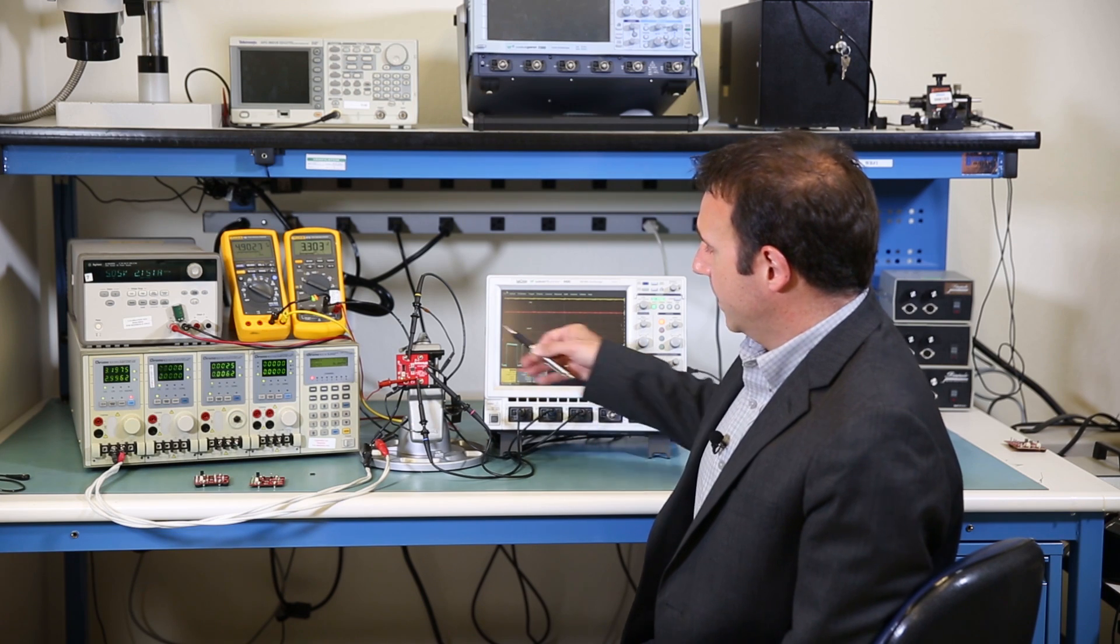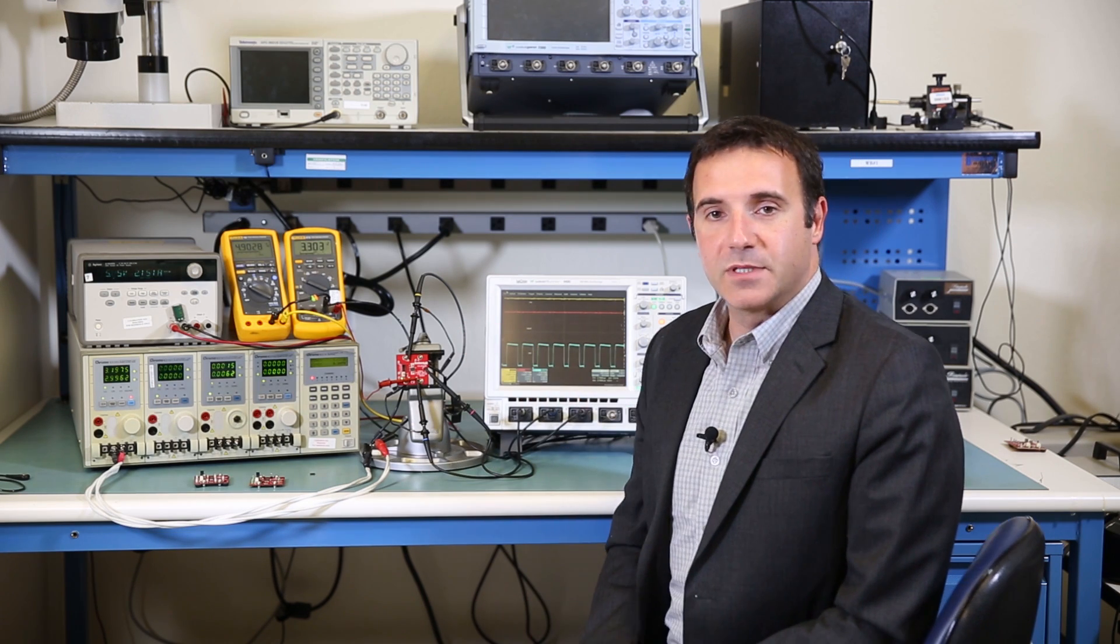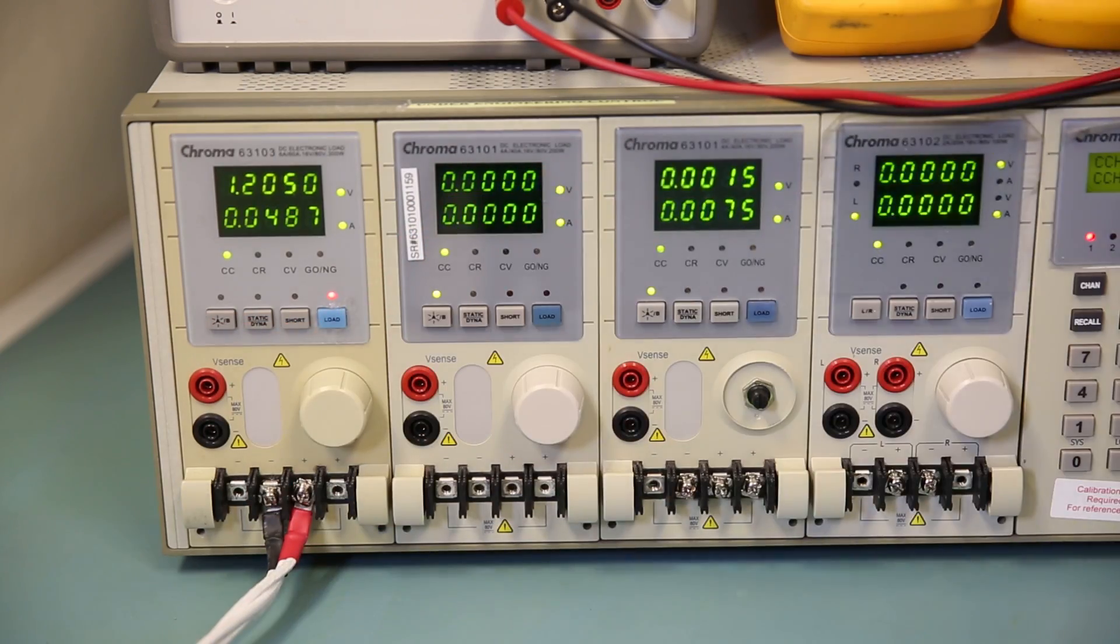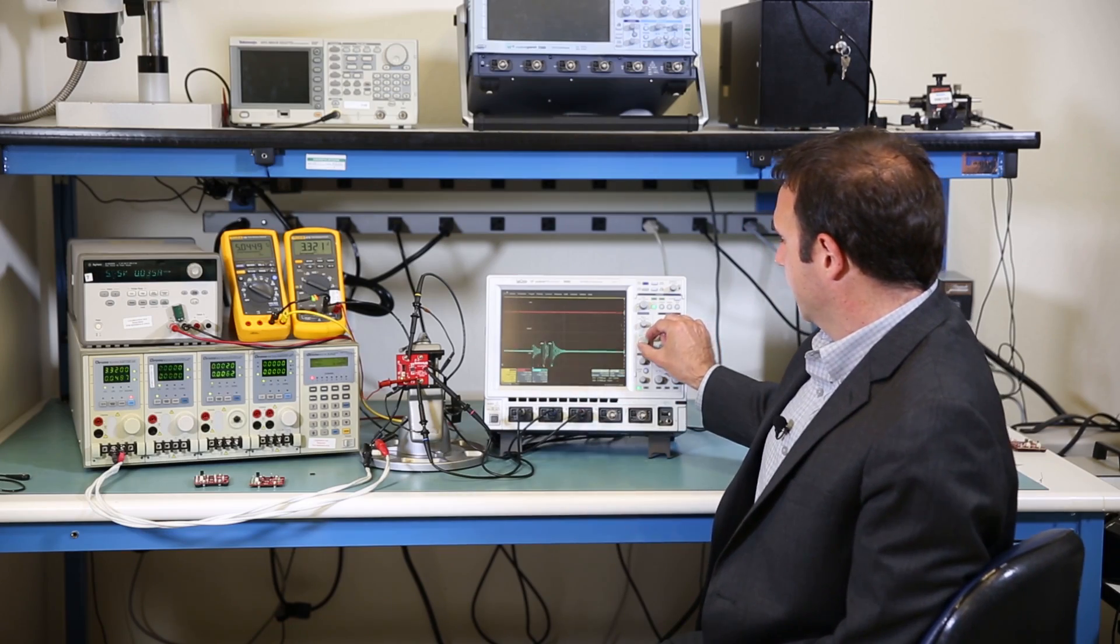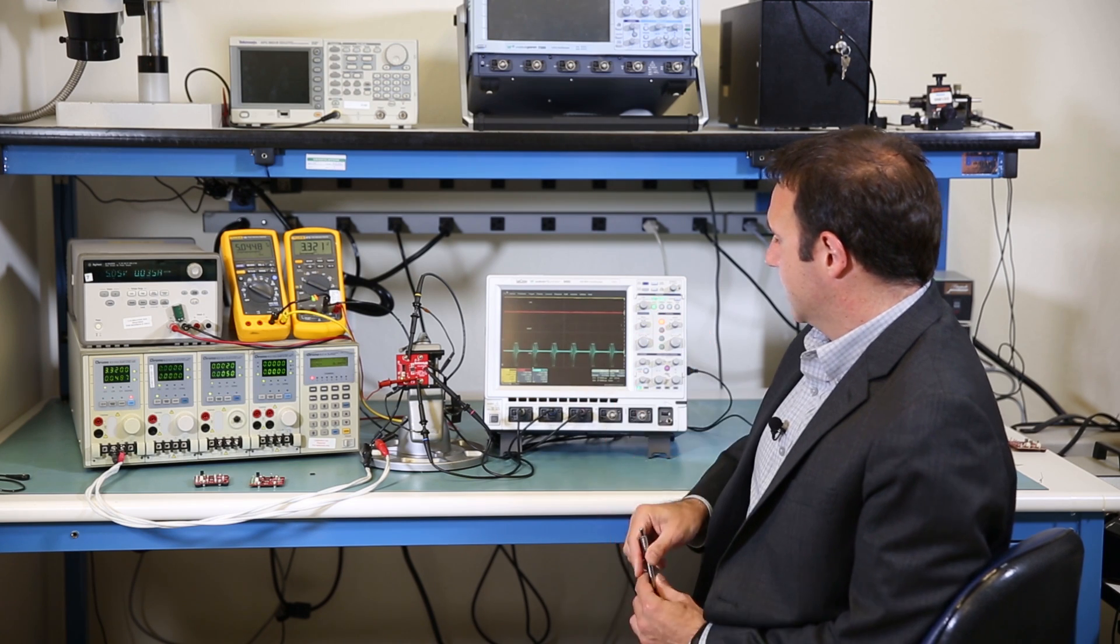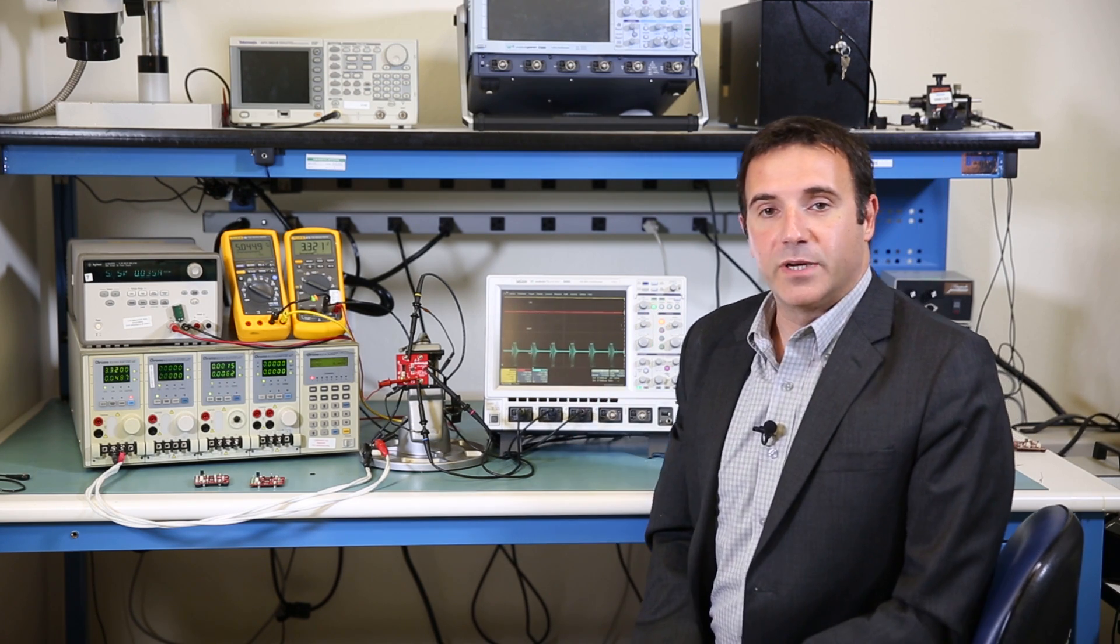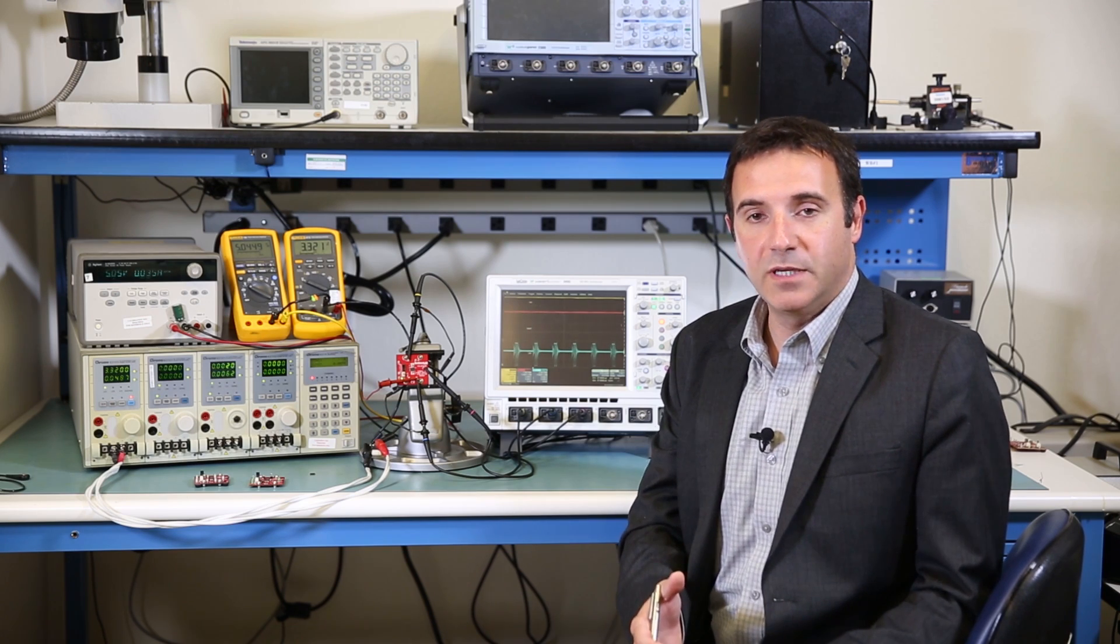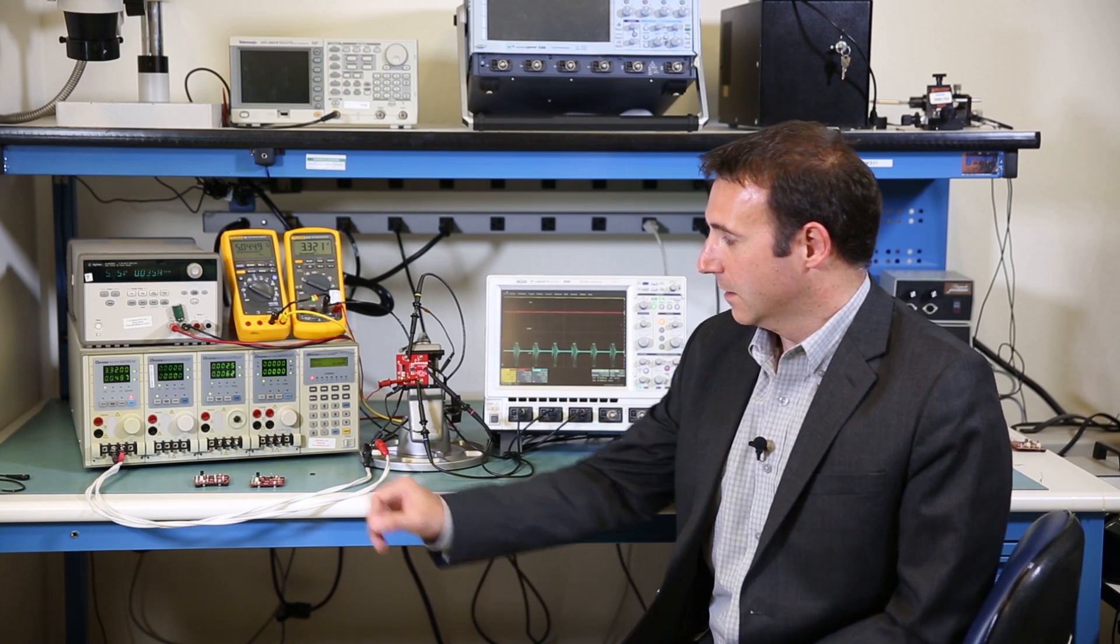We see here that we are currently running at 3 amps of output current. I'm going to switch down to 50 milliamps. And one thing that we are observing immediately is that our switching node operates by burst pulses. This is also known as pulse keeping or burst mode in the literature.